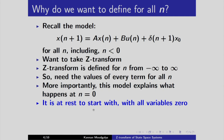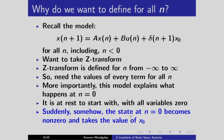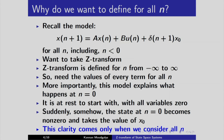The system is at rest to start with, with all variables zero, giving equations of the form 0 = 0. Then suddenly the state at n = 0 becomes non-zero and takes the value x₀, brought about by the delta term. Substituting n = -1 gives delta(0) = 1, so x(0) = x₀. The delta term takes a non-zero value of 1 at only one instant — the initial time — and is zero everywhere else. This clarity comes only when we consider all n values.